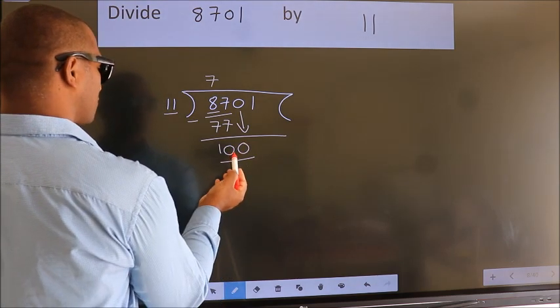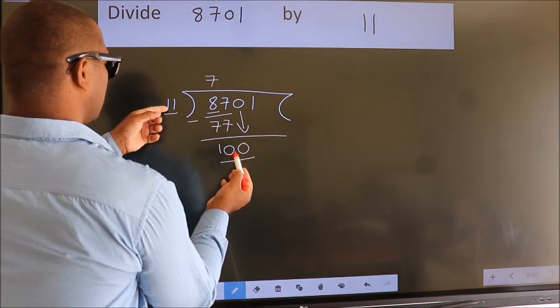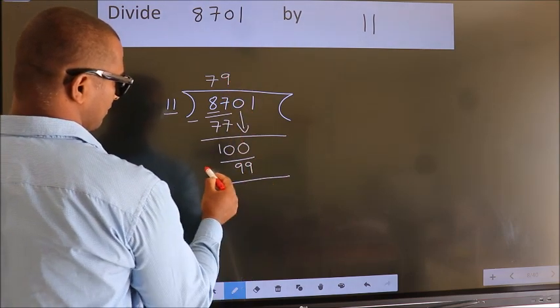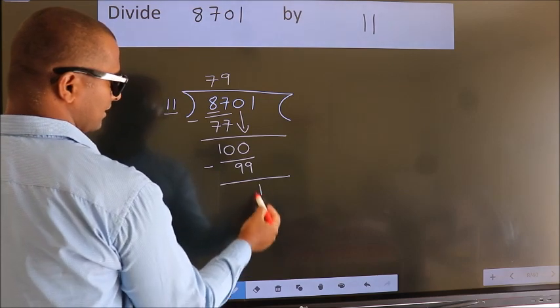A number close to 100 in the 11 table is 11 times 9, which is 99. Now we subtract and get 1.